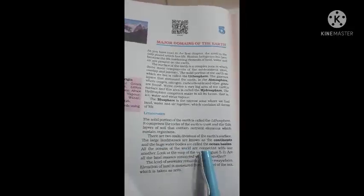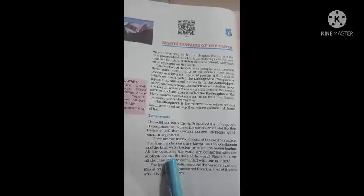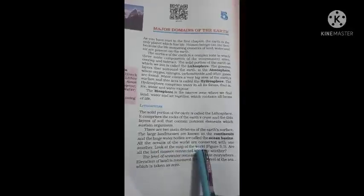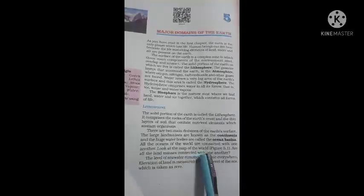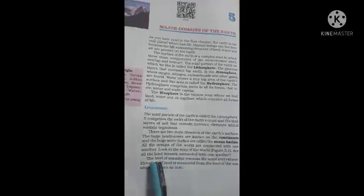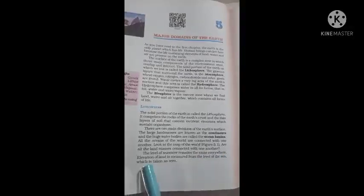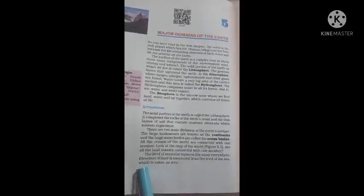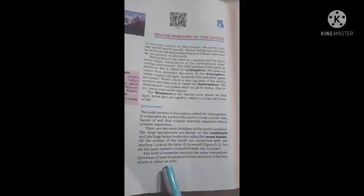All the oceans of the earth are connected with one another. The level of sea water remains the same everywhere. The elevation of land is measured from the level of the sea, which is taken as zero.